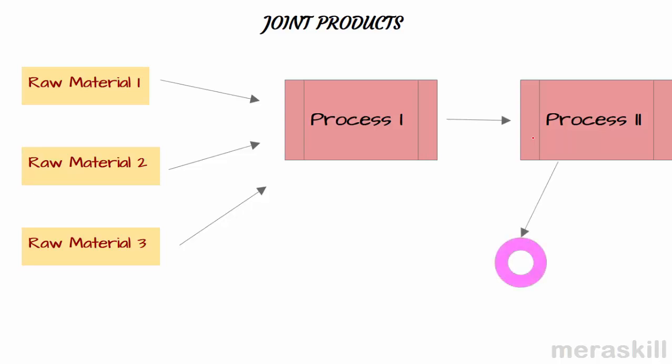Next, now what happens? It is possible that at this point, the output that comes out is two outputs. One is called product A, one is called product B. Possible? Now this point is called the split-off point, where the products are split into two distinct products, two or more distinct products. So what is this called? Split-off point.